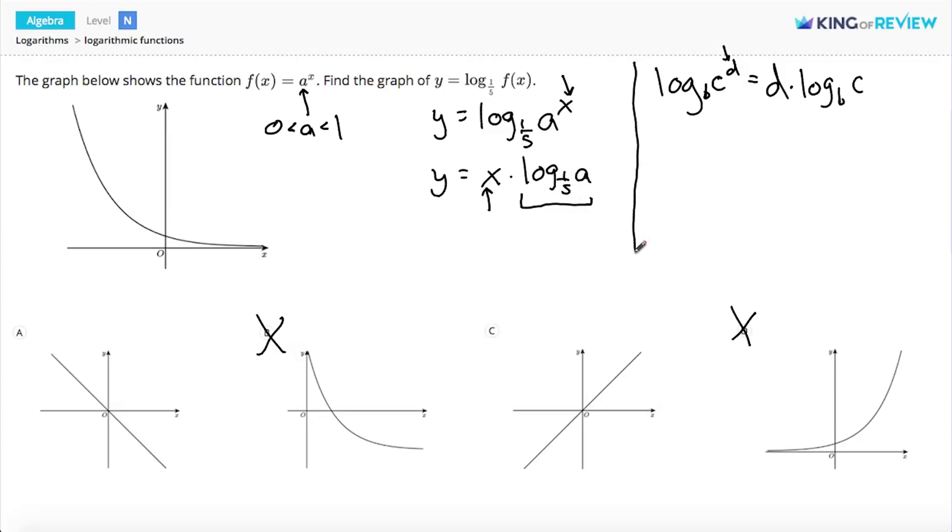there's another property of logs that says, if we have the log base 1 over b of x, let's just call it x, that's the same thing as negative log base b of x. We effectively take the reciprocal of the base by just turning the log negative.